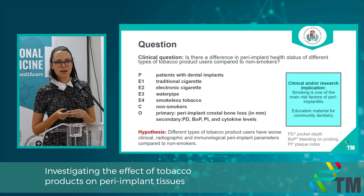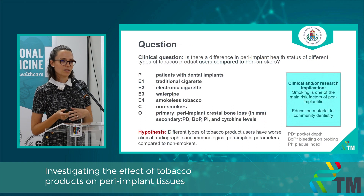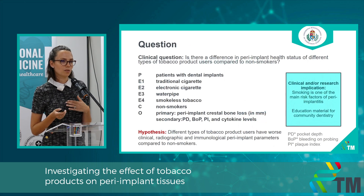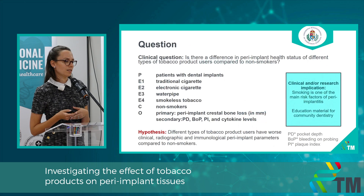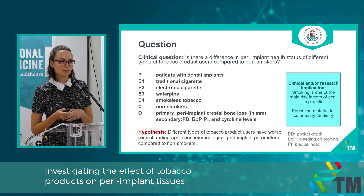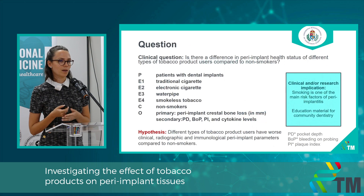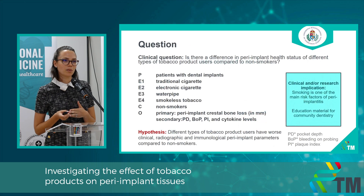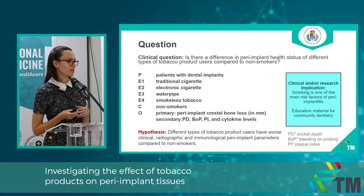Our primary outcome was peri-implant crestal bone loss measured in millimeters. The secondary outcomes were clinical parameters — for example, probing pocket depth, bleeding on probing, plaque index, and pro-inflammatory cytokine levels. Our hypothesis was that different types of tobacco product users have worse clinical, radiographic, and immunological peri-implant parameters compared to non-smokers.